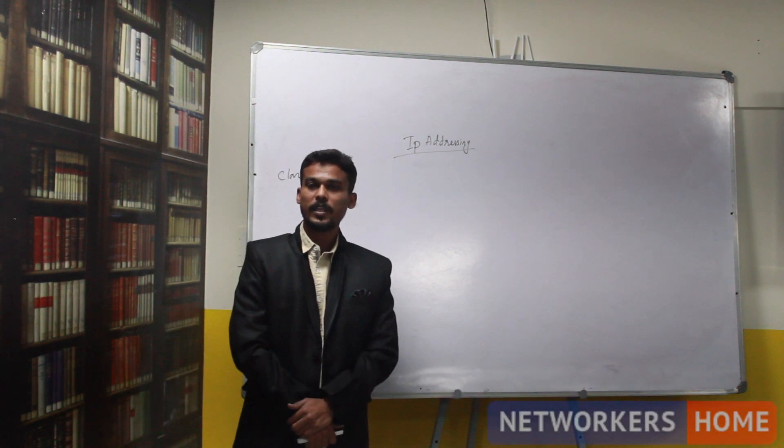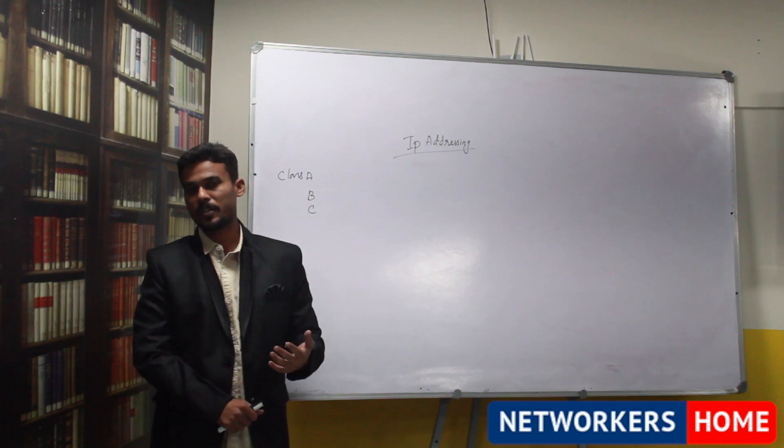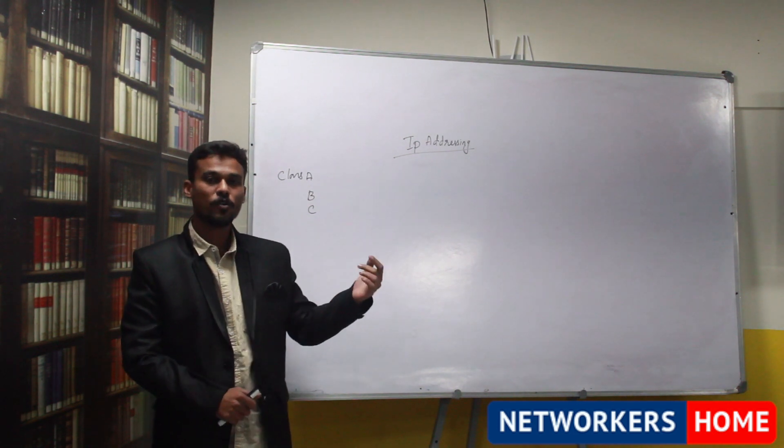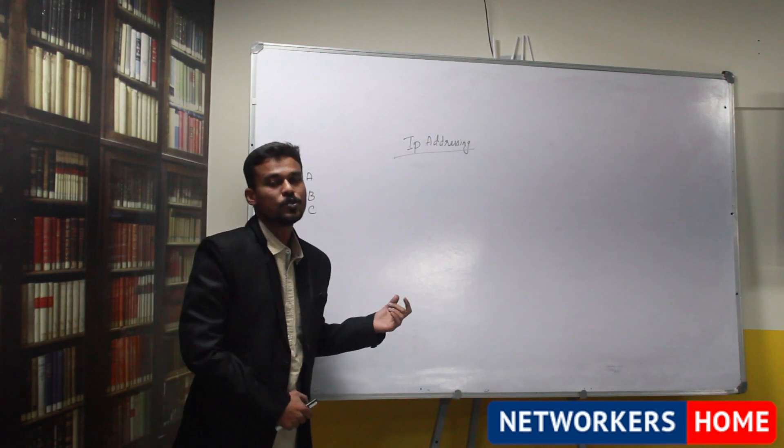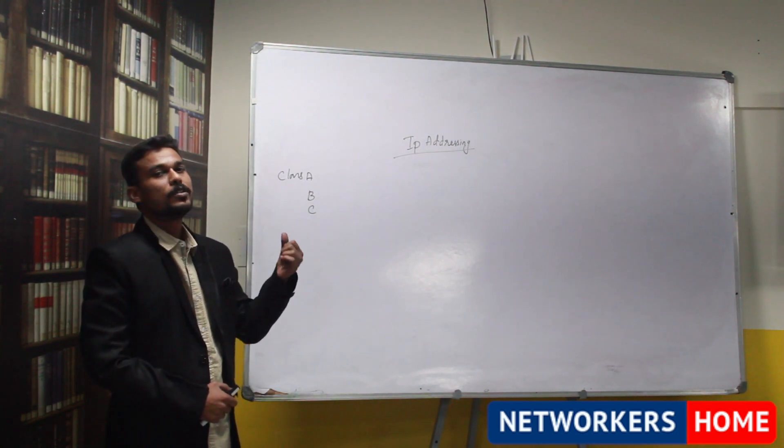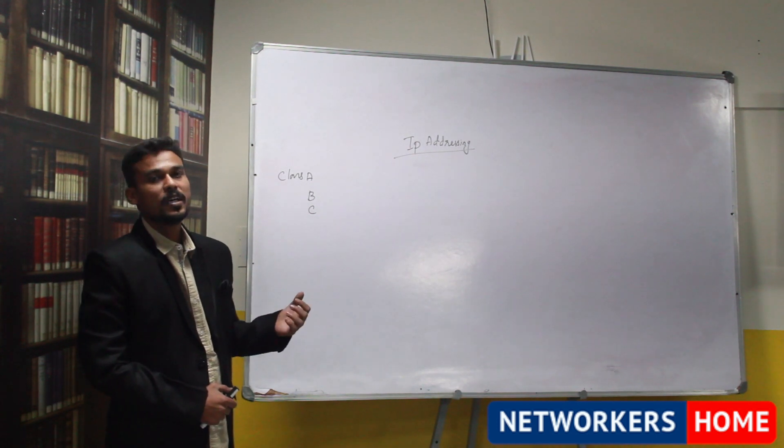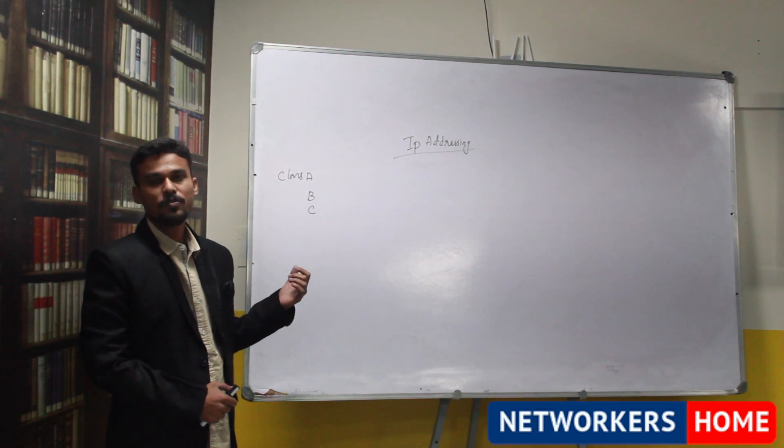In the previous video we have seen the different classes of IP address and who is assigning IP address. So from that we are going to continue the session. We'll see what is the subnet mask of respective classes, what is CIDR values, and how the subnetting is done based on the CIDR values.